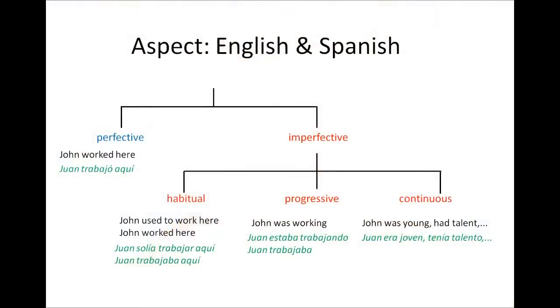The third category presents more complexity because you don't have it in English in the same way. That's the category of the continuous, which is used to describe states and situations. Using the example of Juan, I can say Juan era joven, tenía talento, tenía ambición.